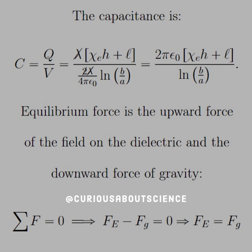So, the capacitance is C equals Q over V, and we know what Q is, we just found it. We know what V is because we found it in the slide before, and we see we have a lot of cancellations. Lambda cancels with lambda, which is great since we don't know what it is. The 2 in the numerator of the potential just cancels with the 4 in the denominator, thus leaving us with the capacitance of 2 pi epsilon naught times chi E h plus L all over ln of b over a.